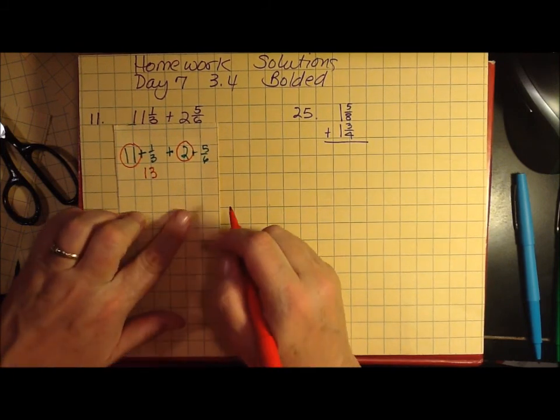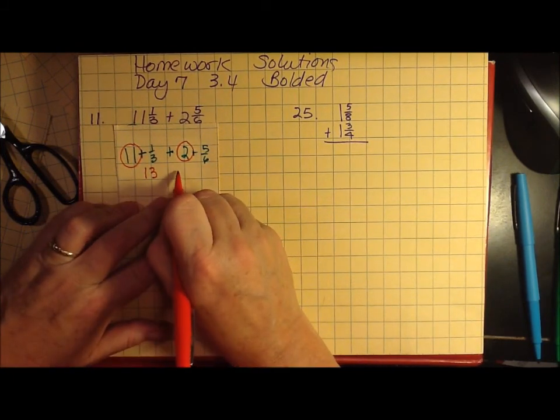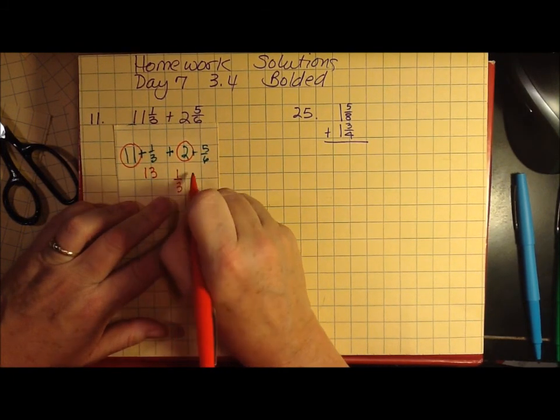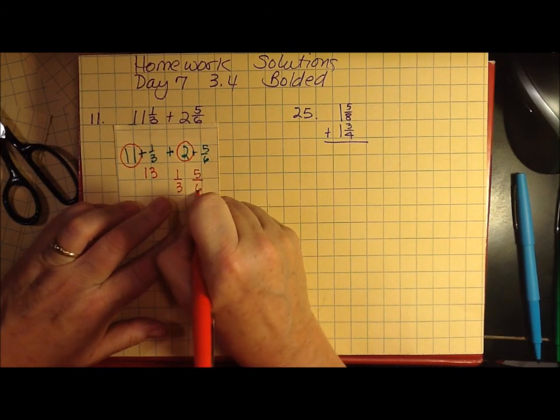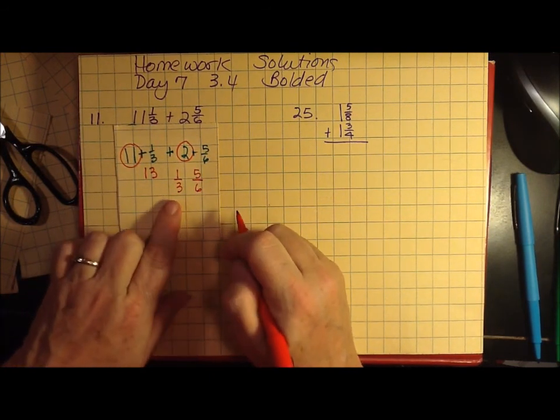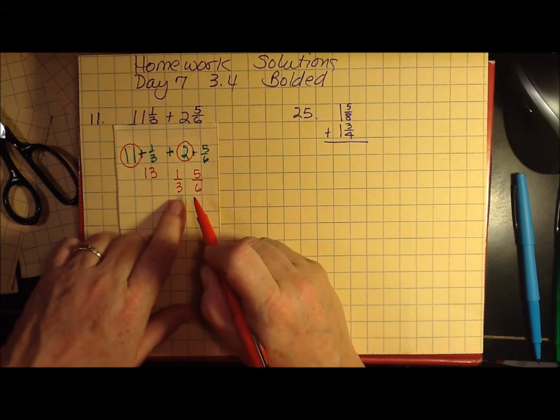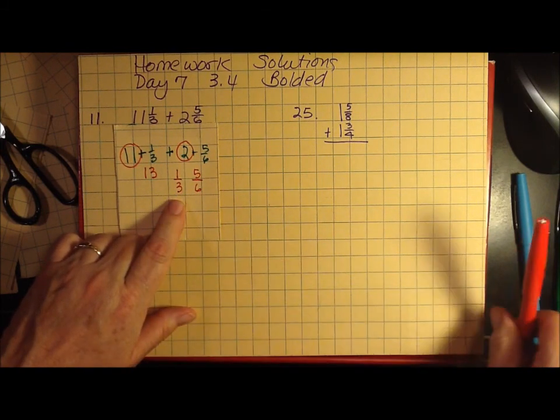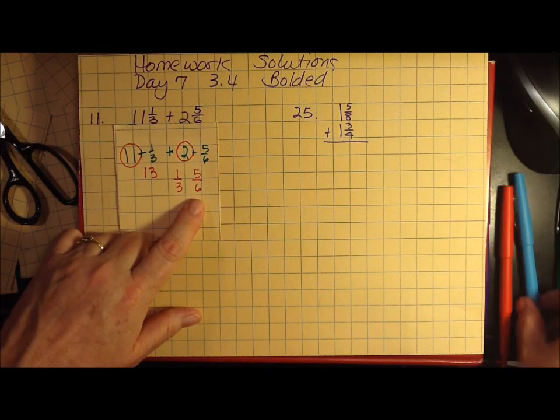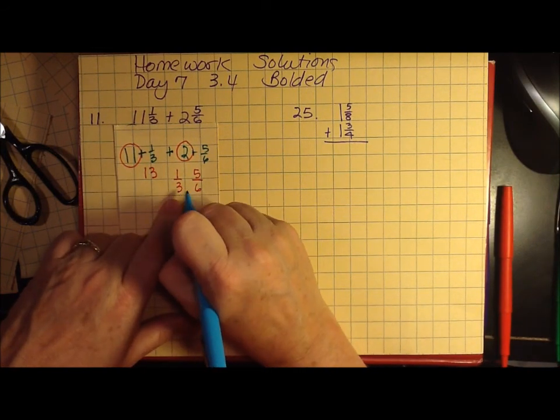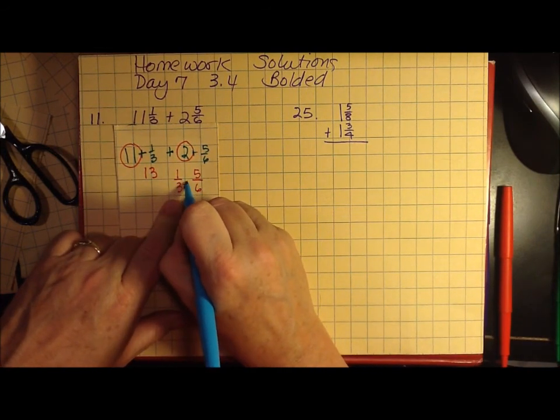Then I need to handle the fractions, and I'm adding one-third and five-sixths. This is a case where one of the denominators is a multiple of the other. So three goes into six two times. To get three to six, I have to multiply it by two.